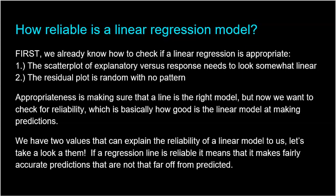Before we answer that, let's go back to what we've already learned. In earlier topics, we learned how to check if a linear regression is appropriate. There are two ways: first, your scatter plot of explanatory versus response variable needs to look somewhat linear. Second, we use a residual plot — we want a residual plot to be completely random with no pattern. Appropriateness is simply making sure the line is the right model to use. Now we want to explore reliability — how good is our line at making predictions?